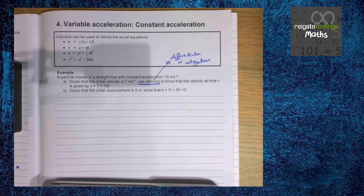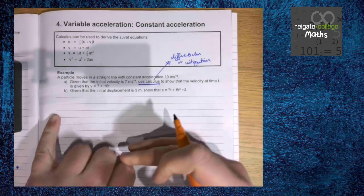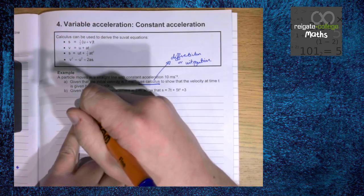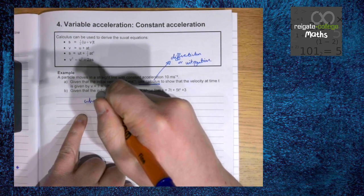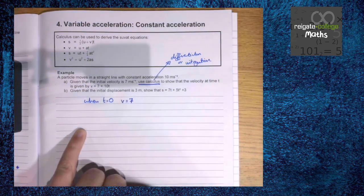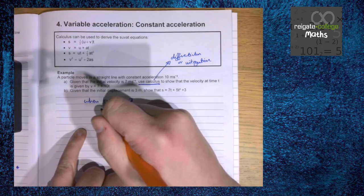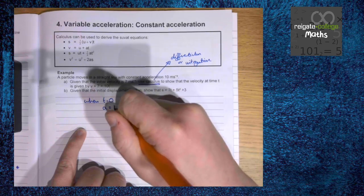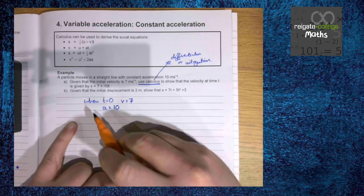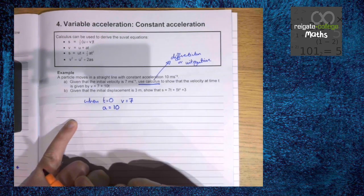It's important that you read the question to be able to answer it completely. We're given that the initial velocity is 7, so we know when t is 0, v is 7. We also know that a is 10 and we're trying to prove that v is 10t plus 7.